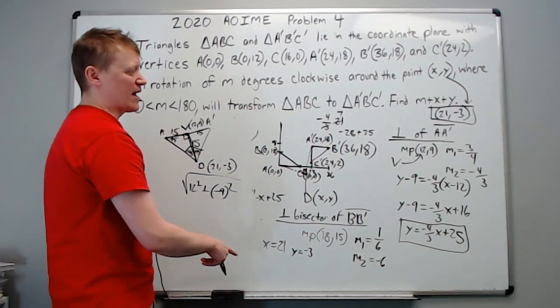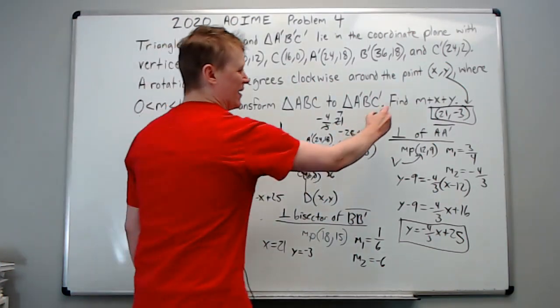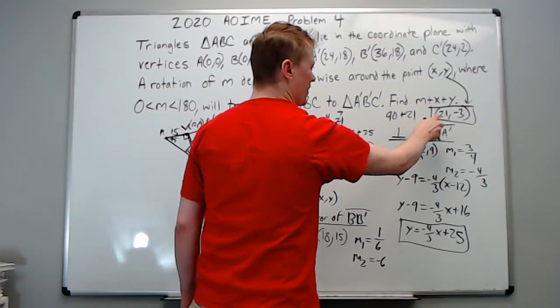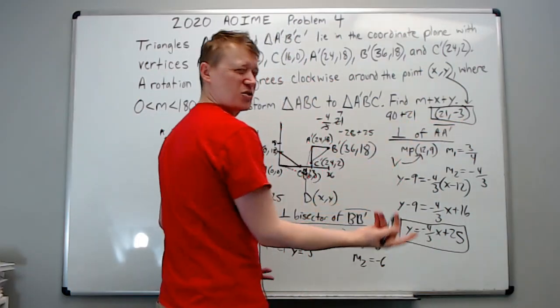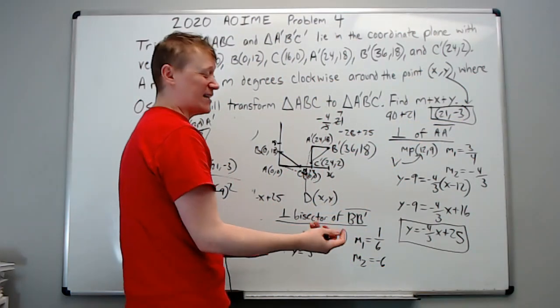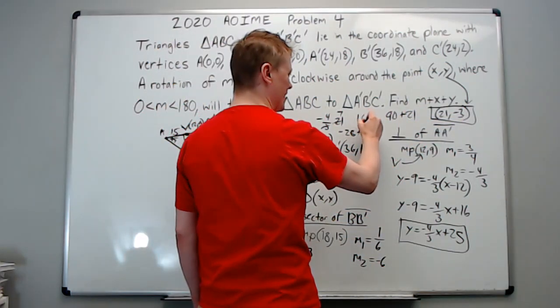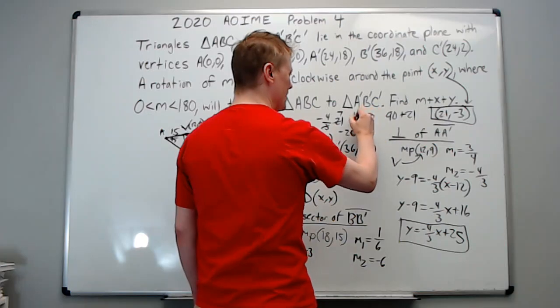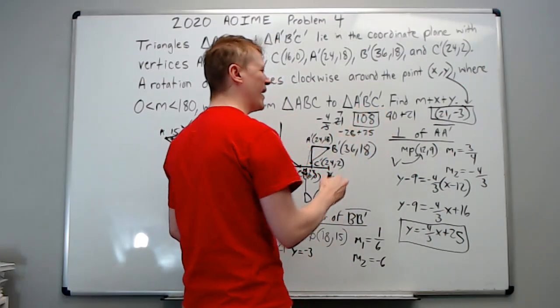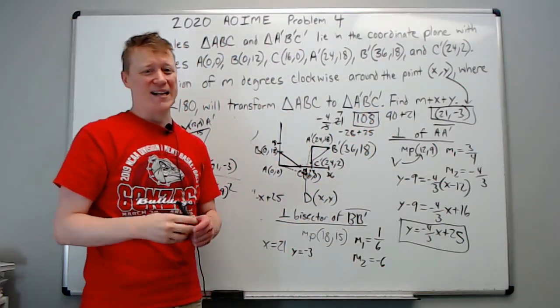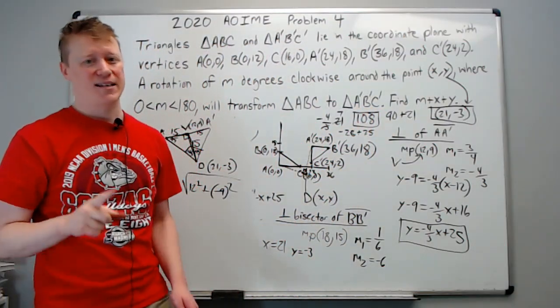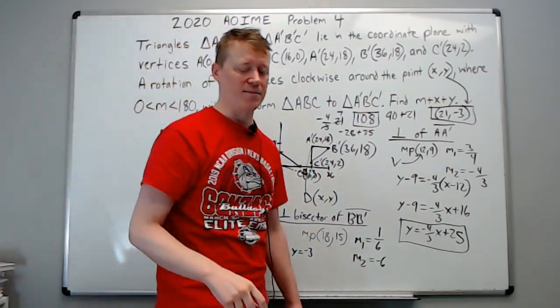So now we add: 90 degrees plus the coordinates 21 and −3. That's 90 + 21 + (−3) = 90 + 18 = 108. That's the answer.